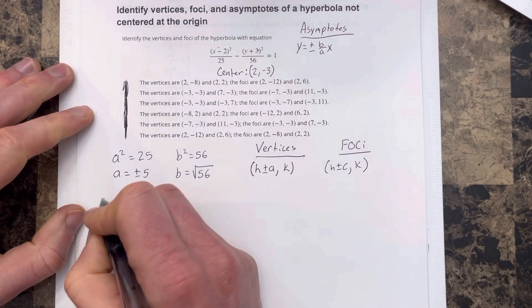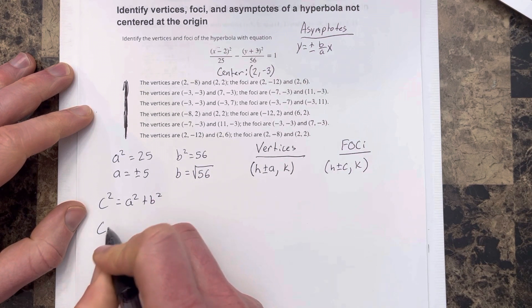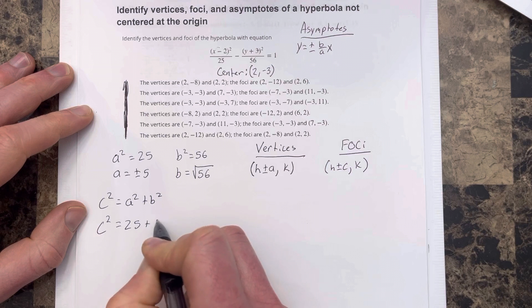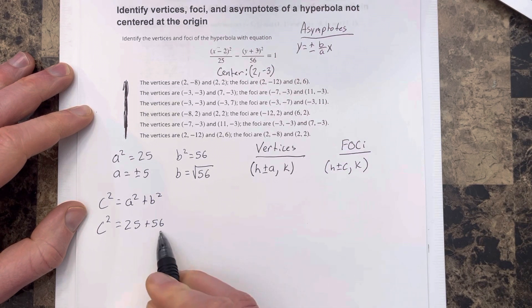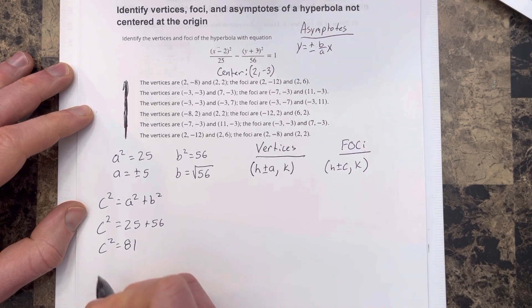We can find c by doing c squared equals a squared plus b squared. So we get c squared equals 25 plus 56, which equals 81. Taking the square root of each side, we get c equals plus or minus 9.